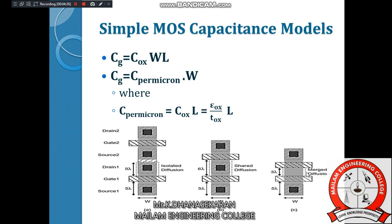The third type is merge diffusion. In this case, in the layout, at point A, the terminals are just merged. That is merge — which means in the layers: source 1, gate 1, gate 2, drain. Source 2 and drain 1 are the same node because they are merged with each other.